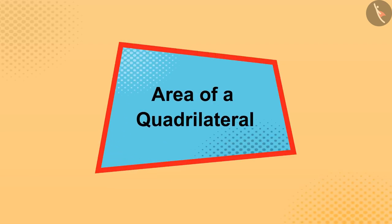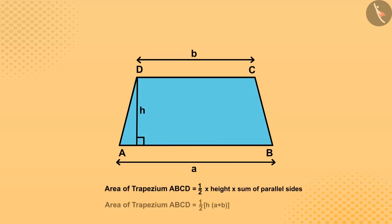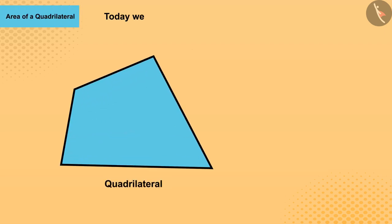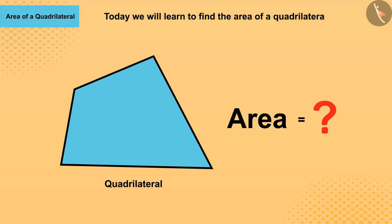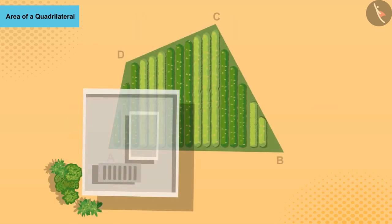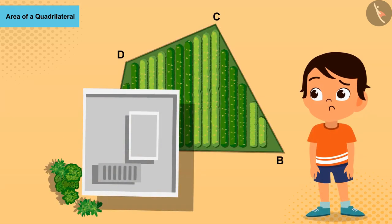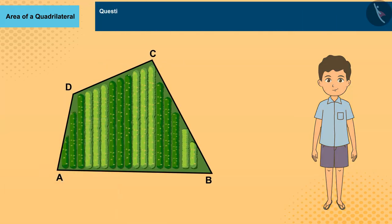Welcome all of you to this video. In the previous video we learned to find the area of a trapezium. Today we will learn to find the area of a quadrilateral. Behind Aman's house is a quadrilateral shaped field.